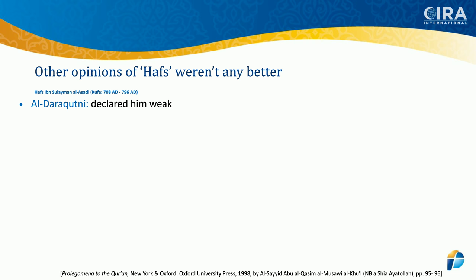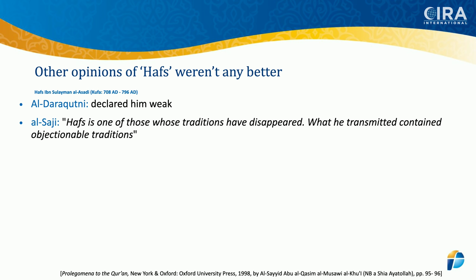Al-Daraqutni declared him weak. Al-Saji said Hafs is one of those whose traditions have disappeared and what he transmitted contained objectionable traditions. Saleh ibn Muhammad said his traditions were not recorded and all of them were objectionable. Ibn Kharash called him a liar who was rejected for fabricating traditions. Ibn Hayyan said he used to change the chains of transmission and even fabricated chains for traditions that did not have them. If he changed those chains of transmission relating to the Qiraat, that suggests he was trying to make himself look more authoritative.